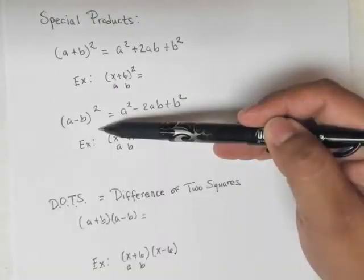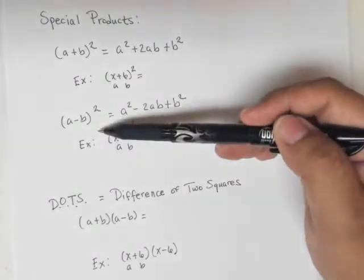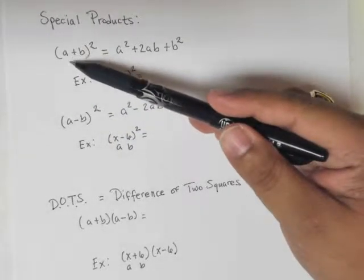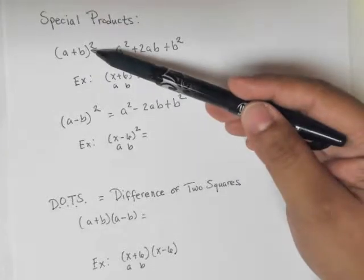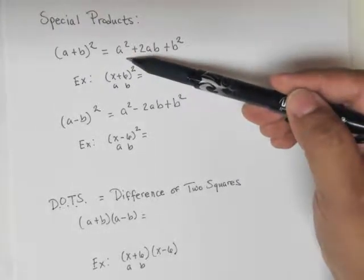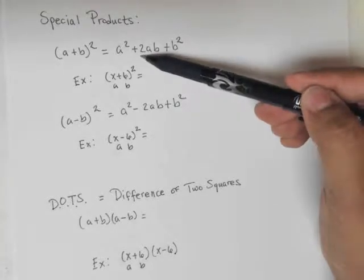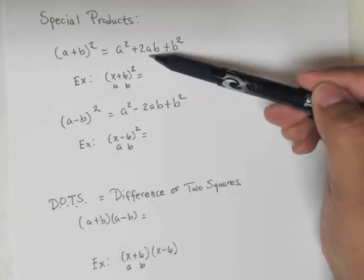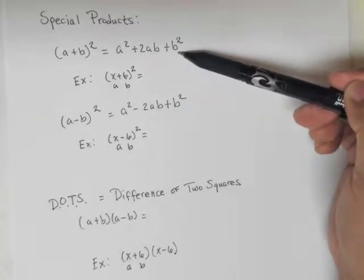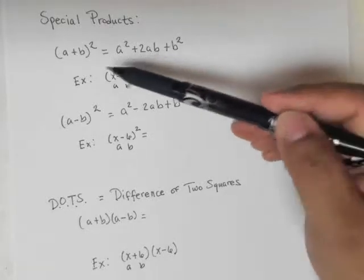These two special products are what we call the binomial squared. Here we have (a+b)², and the trick is that all you have to do is square the first term, multiply two times the first two terms a and b, and then square the second term. This formula assumes all terms are positive.